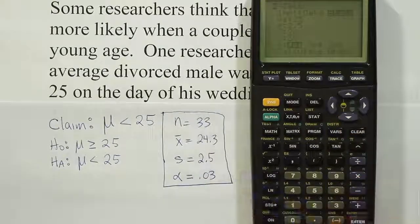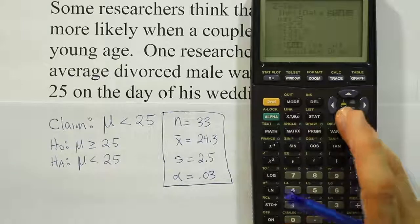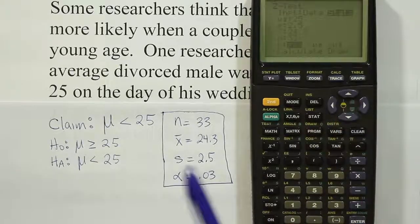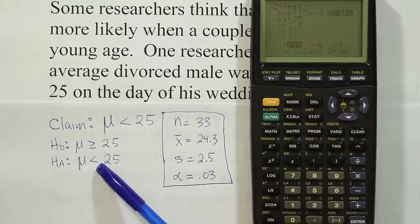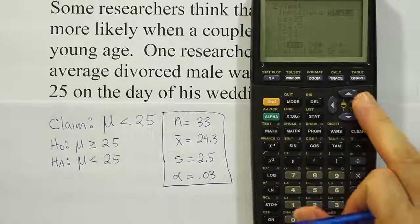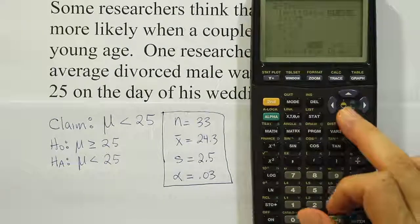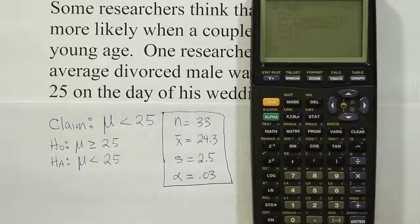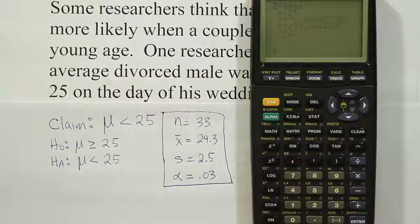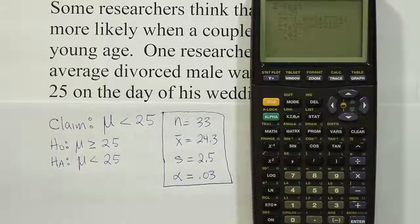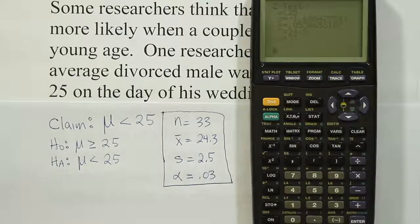And lastly, the n, which is 33. And then finally, the symbol we find in HA. The symbol we find in HA is a less than symbol. So we're going to come over here and hit enter on that. And then finally, calculate. And it tells me the test stat, but more importantly, it tells me the p-value is .0539.